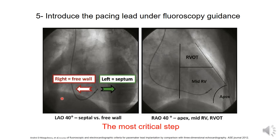Lead perforation risk is especially high in patients with RV infarction or frail elderly patients with thin-walled RV. We then use the RAO 40-degree view, which differentiates the accurate position of the lead in the apical septum, mid RV, or RV outflow tract. The LAO 40-degree view is the most important view overall.